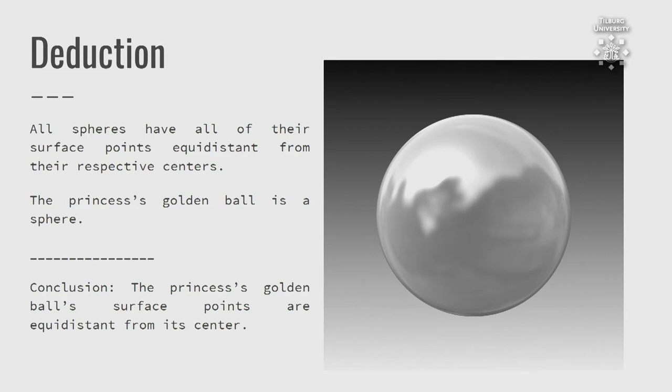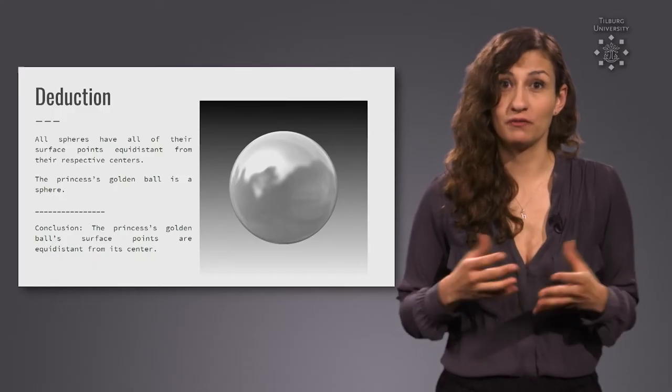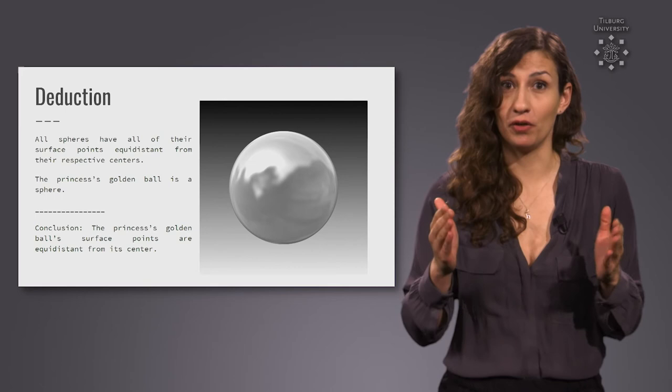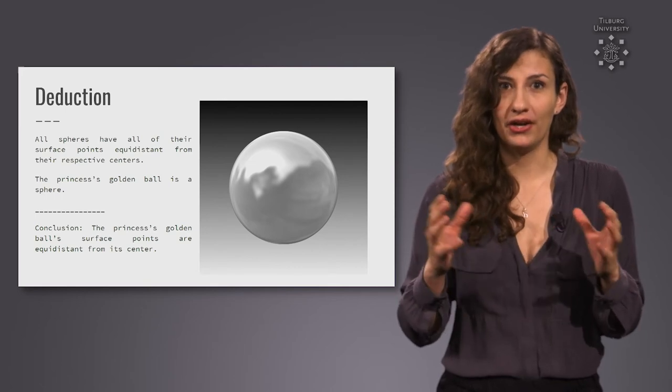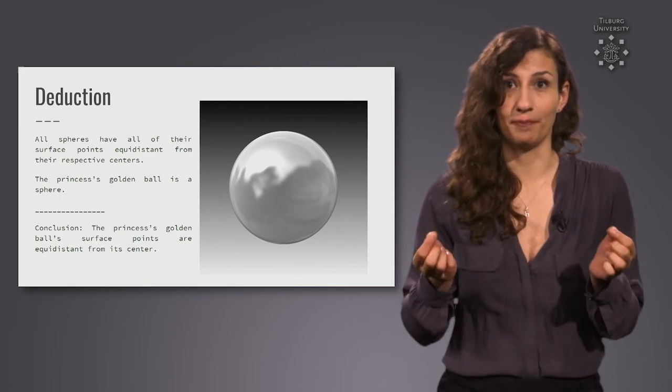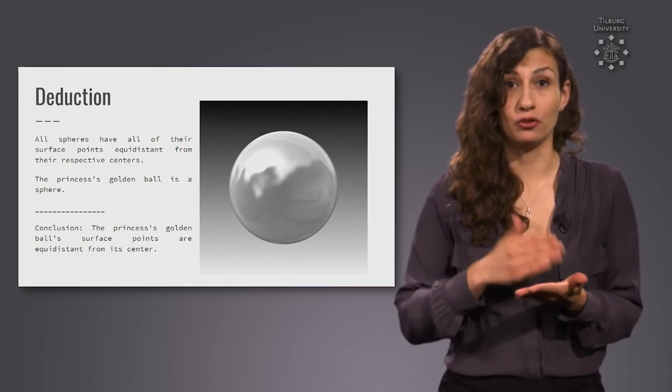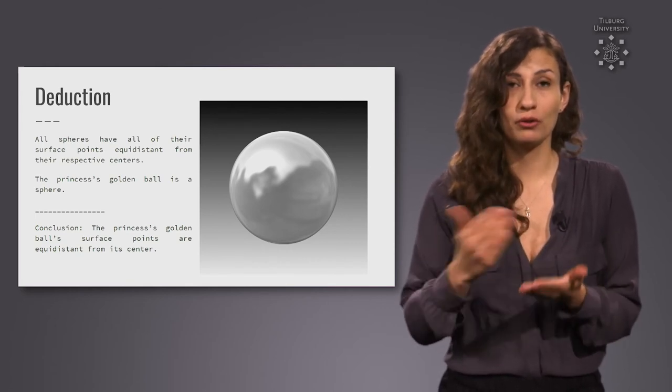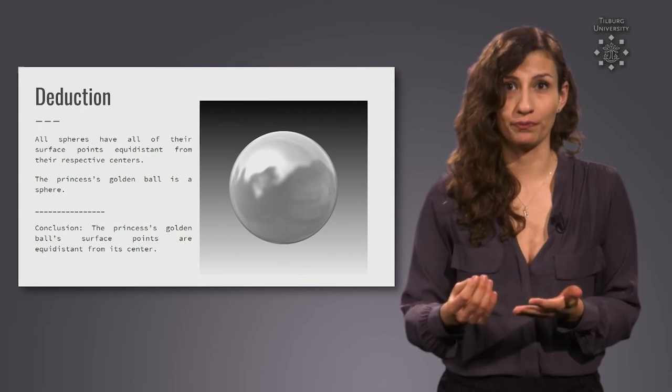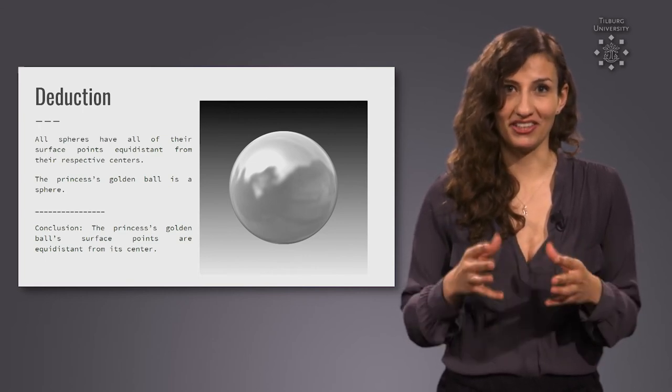Let's further say that the princess's golden ball is a sphere. From that, it must follow that all surface points of the princess's golden ball are equidistant from its center. The frog prince can go and check, but given the two premises are true, the conclusion must be true. This form of reasoning is called deduction.